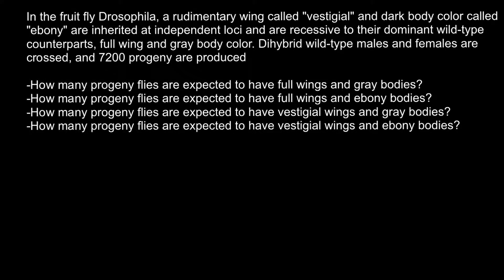Hello and welcome to Nikolai's genetics lessons. Today's problem is in the fruit fly Drosophila: rudimentary wing called vestigial and dark body color called ebony are inherited at independent loci and are recessive to the dominant wild-type counterparts — full wing and gray body color.